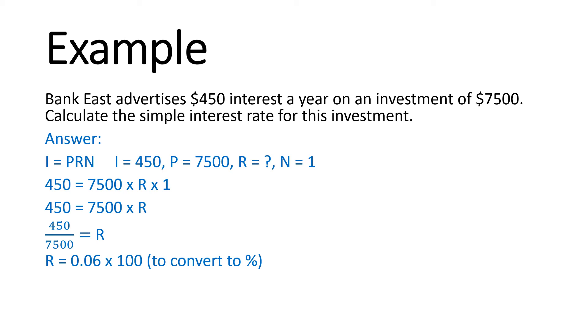Now that's a decimal, so you want to turn that into a percentage. You multiply it by 100, and you will get R equals 6%. You can always go back and check your answer by doing the calculation of $7,500 times 6% times 1, and it will equal $450. Then you know your answer is correct.